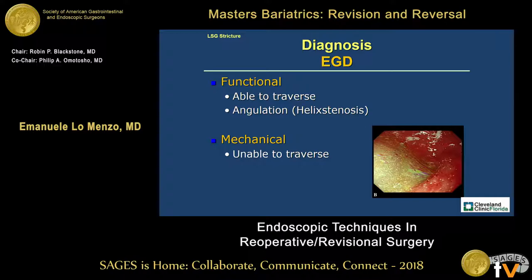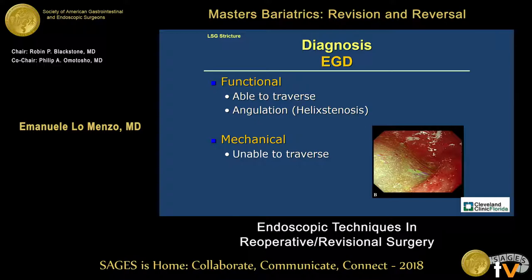The endoscopic diagnosis is important because we can distinguish if this is a functional or a mechanical obstruction. A functional obstruction means we are able to traverse that area, although some maneuvers with the endoscope are required — an angulation problem or helix stenosis as opposed to a mechanical one. The treatment is probably different for each.